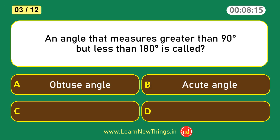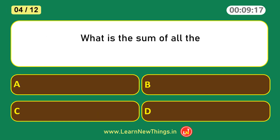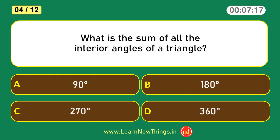An angle that measures greater than 90 degrees but less than 180 degrees is called an obtuse angle. What is the sum of all interior angles of a triangle? 180 degrees.